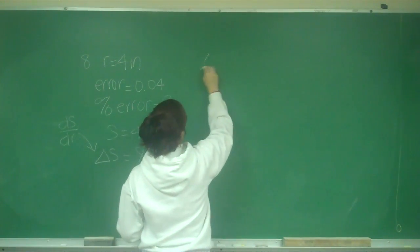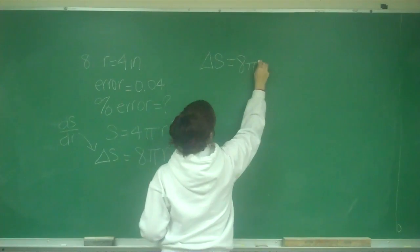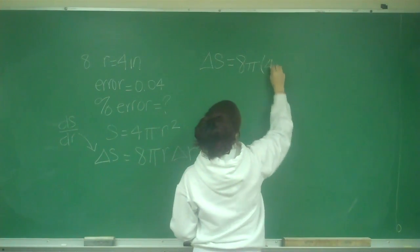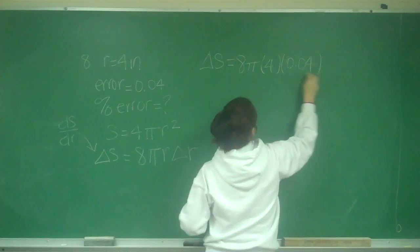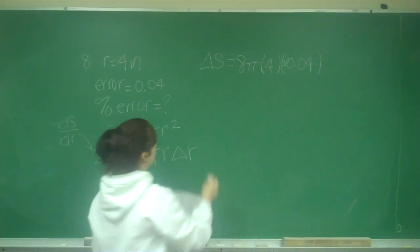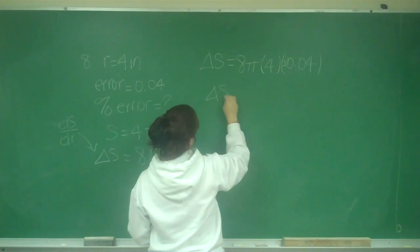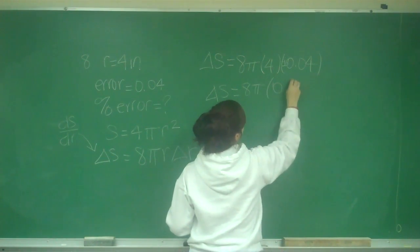Now I just plug in my values. Delta S equals 8 pi times R, which is 4, times my error, which is 0.04, which is plus or minus. So I now have S equals 8 pi times 0.16.